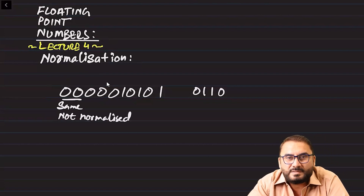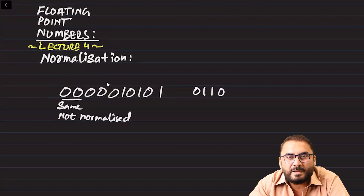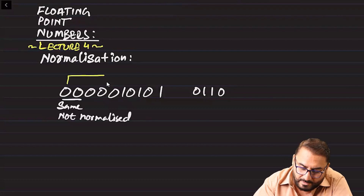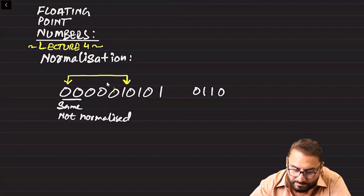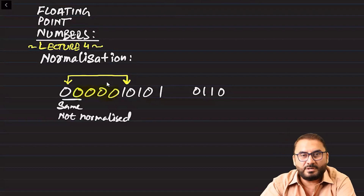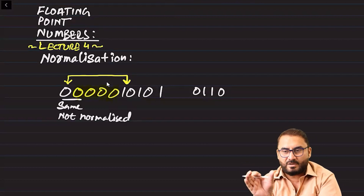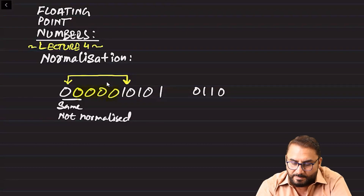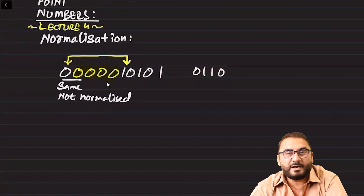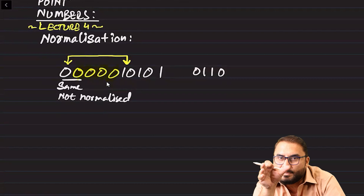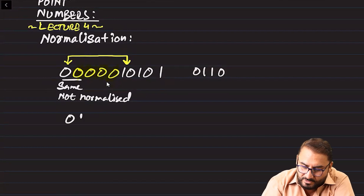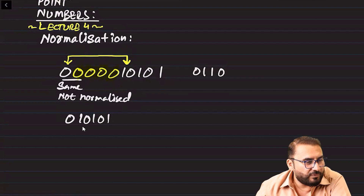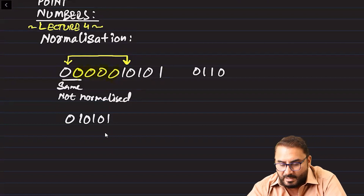Non-normalized numbers are not saved in computers — you must normalize them first. To normalize, mark the first two different bits in the mantissa. Whatever bits are in between those — in this case four bits — will be removed, and the bits on the right side will shift toward the first digit. So after removing those four bits, the mantissa becomes 0 1 0 1 0 1.